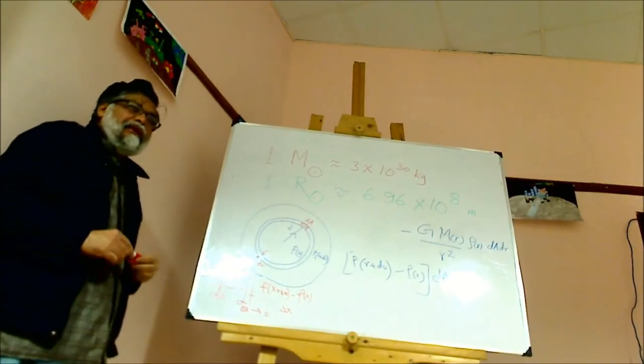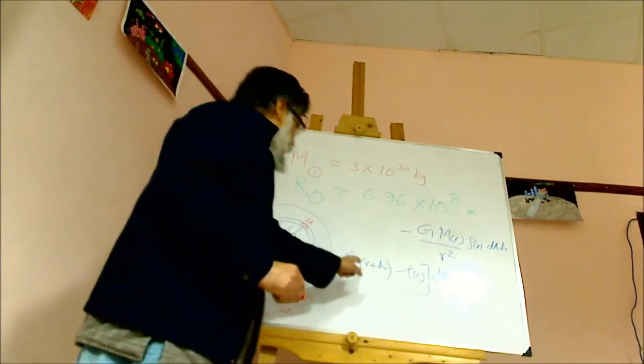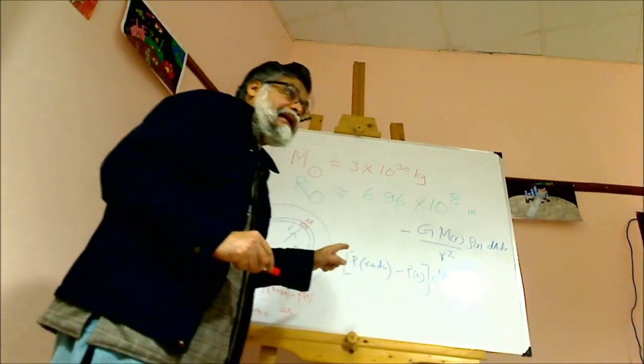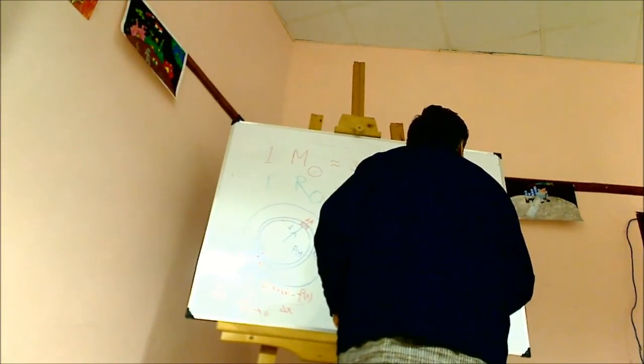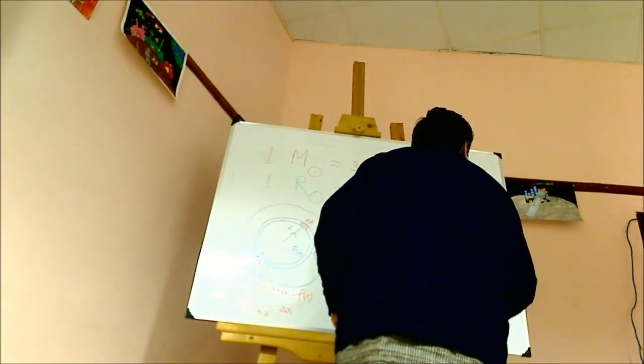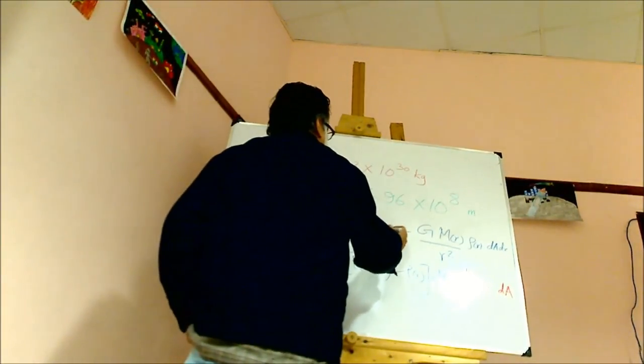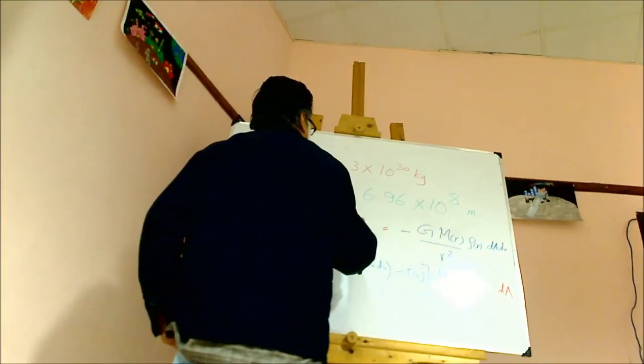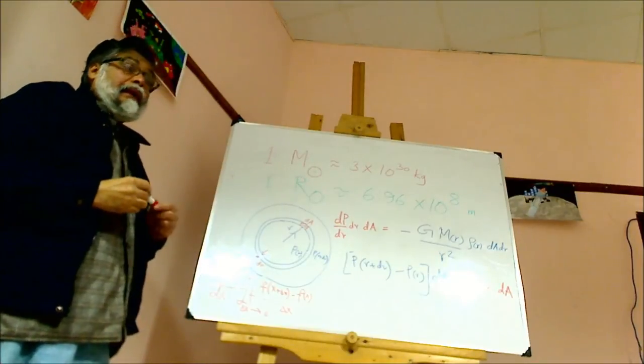So therefore, this object is dP/dr multiplied by dr. So therefore the equation we have got is this is equal to dP/dr multiplied by dr into dA.